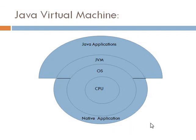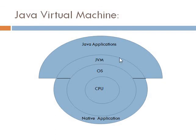Now consider the figure in this slide. You can see that the JVM acts as a layer between the operating system and the Java applications. JVM provides a framework and other runtime services like security checks, memory management, etc. to the Java applications.